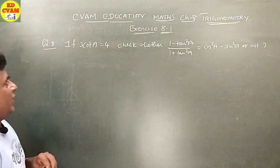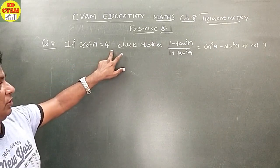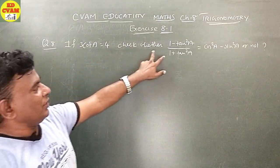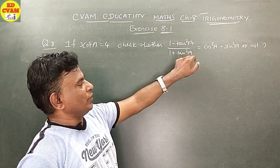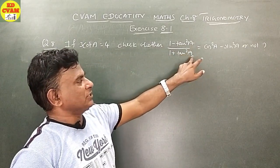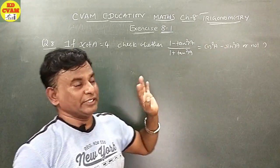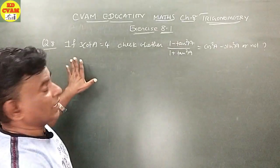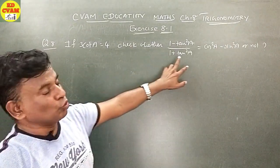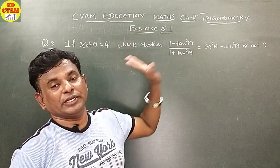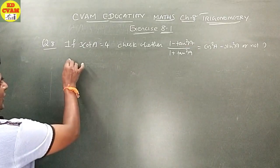Question number 8: if 3 cot A equals 4, check whether (1 minus tan squared A) upon (1 plus tan squared A) equals cos squared A minus sin squared A.